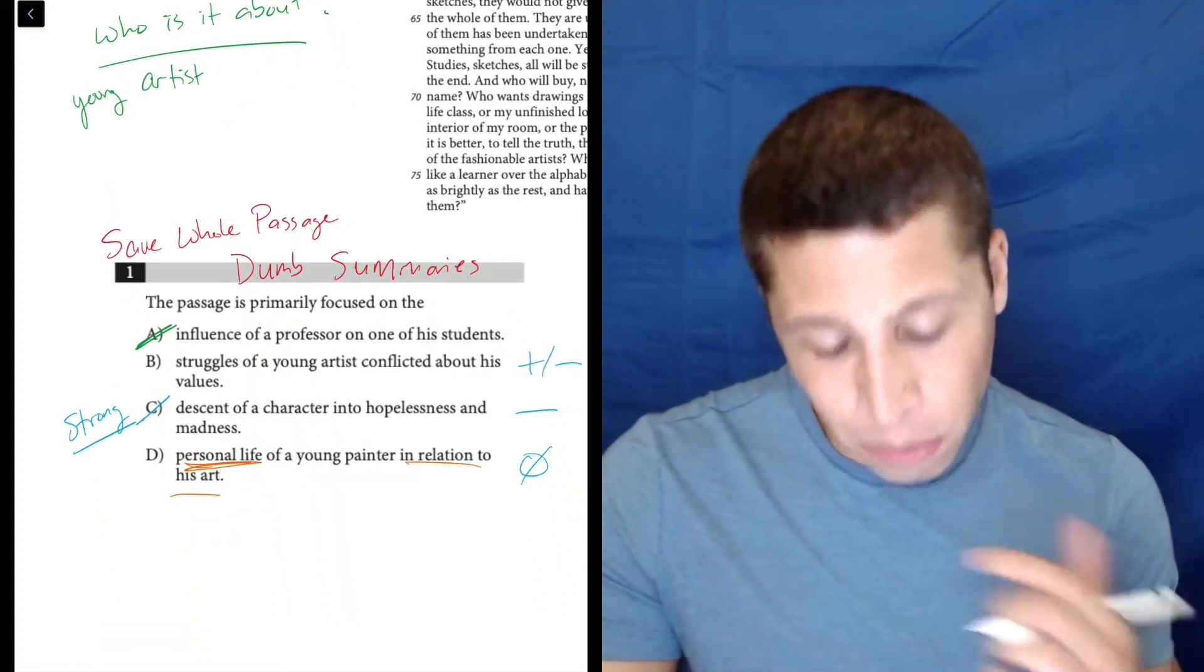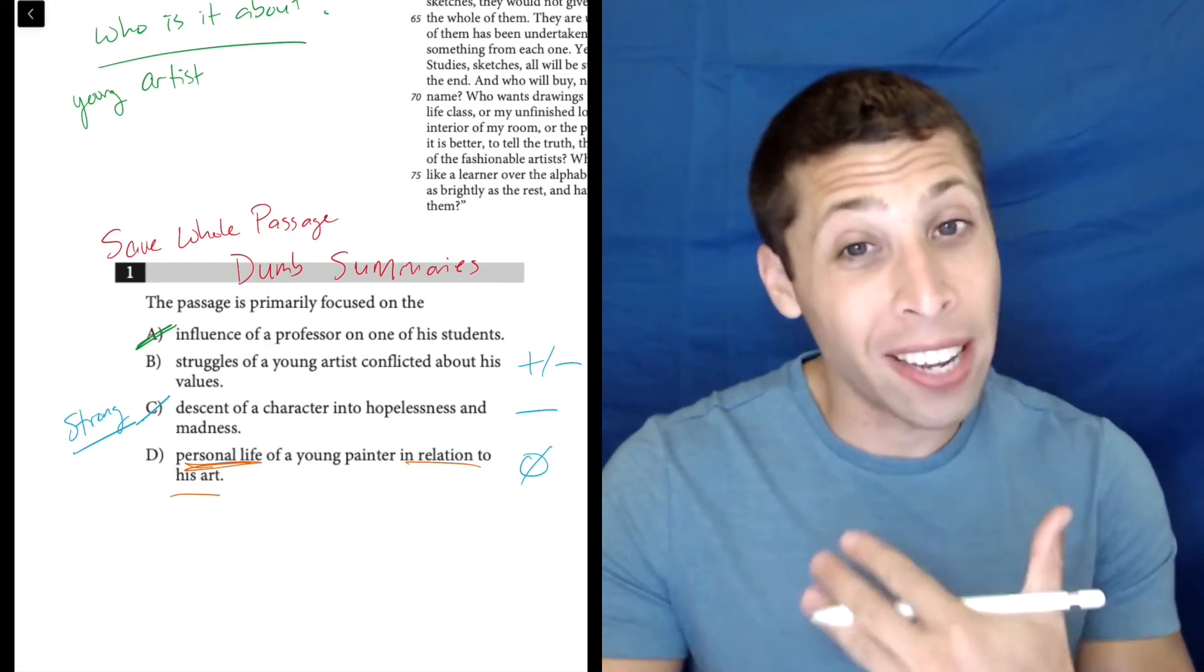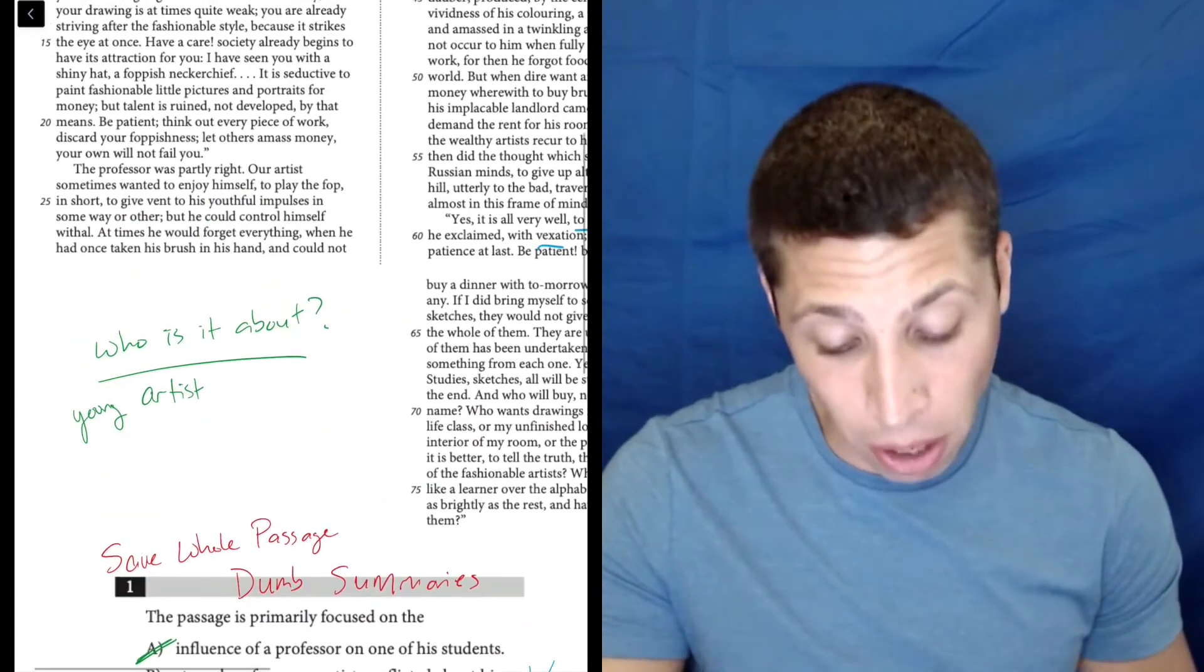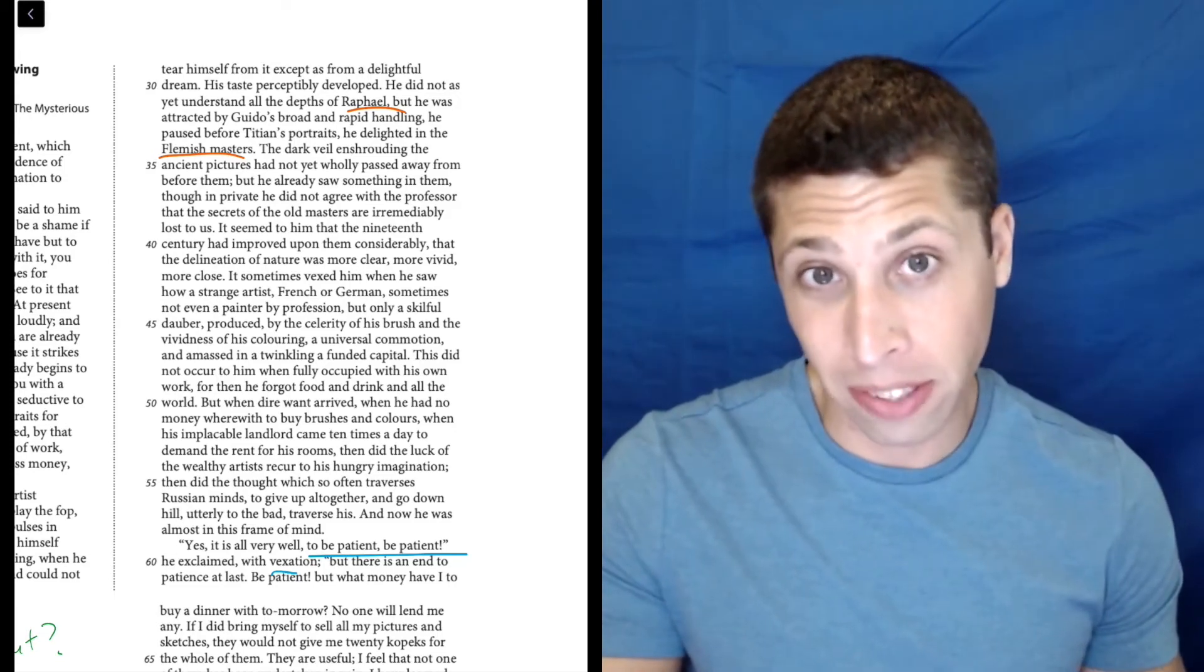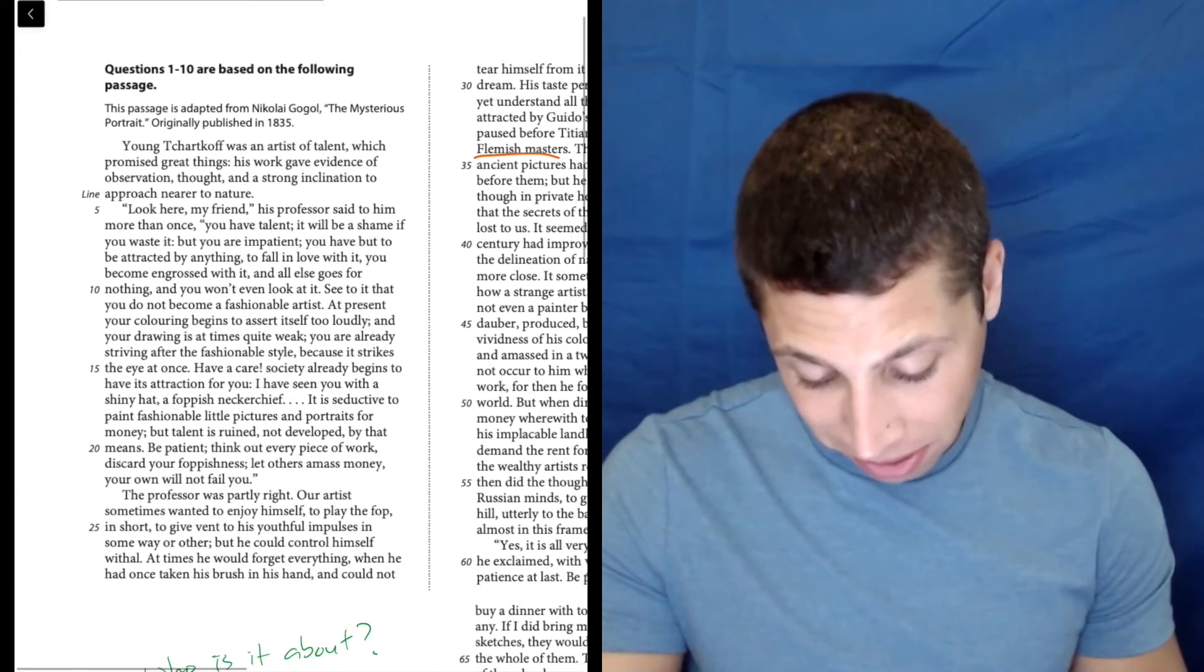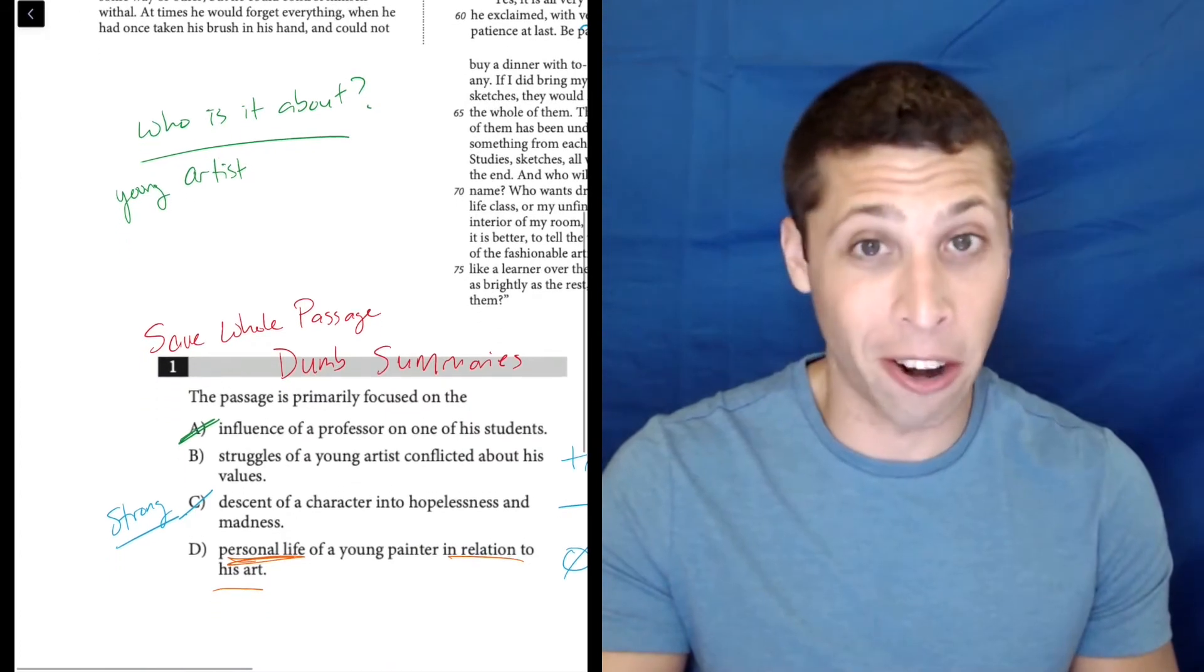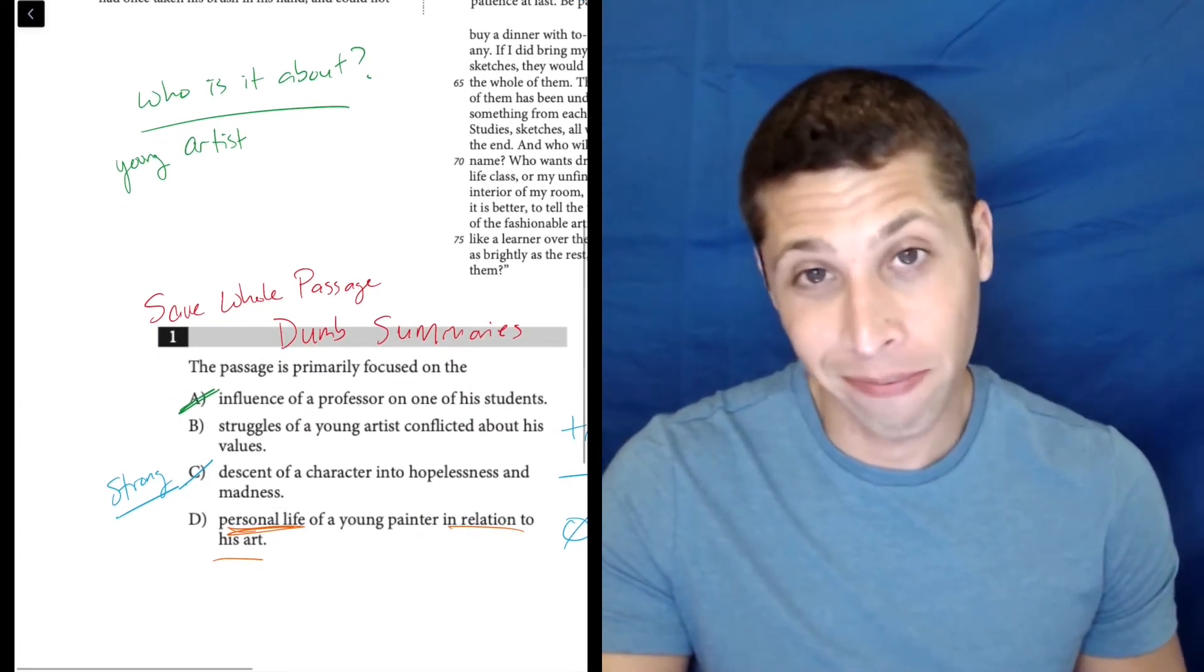I don't know that really counts as his personal life. And in relation to his art - well, are we really talking about his art? A lot of times we're talking about other people's art, right? They're talking about the Flemish masters and Raphael. So I don't really remember his art being a major part of this either. Kind of like before when we said, who's the main character? Is it the artist or is it his art? Well, it's kind of him. And so that leaves us with B.